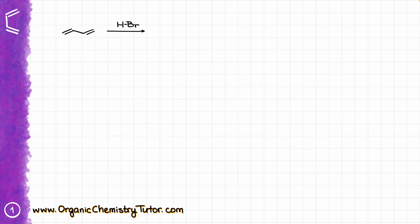Let's get back to this reaction, which is the hydrohalogenation of butadiene. If I react this butadiene with hydrogen bromide, which I have above the arrow, we are going to start this reaction with a simple electrophilic attack on the diene. The pi bond of the alkene is going to reach out for that hydrogen, and the electrons from the HBr bond are going to end up on the bromine.